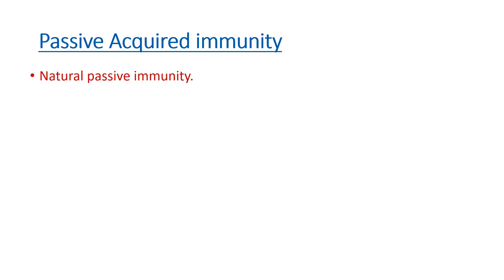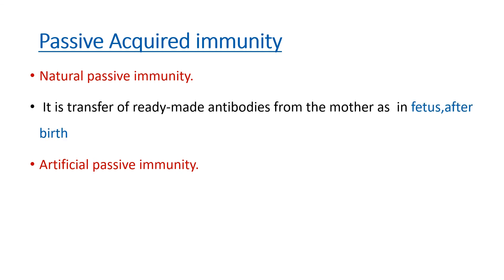The next type is passive acquired immunity. Here, the body is not producing the antibody; instead, antibodies are given directly. There are two types: natural passive immunity and artificial passive immunity. In natural passive immunity, antibodies come from the mother — in the fetal stage via the blood, and after birth through colostrum, which is highly rich in antibodies and provides resistance to the newborn. Ready-made antibodies from the mother are passed on to the child.